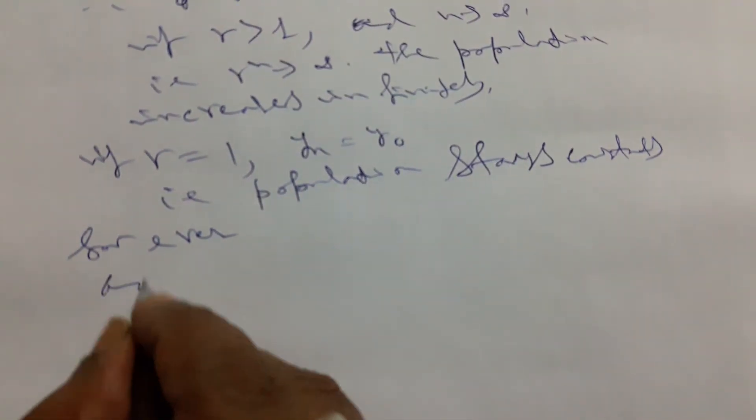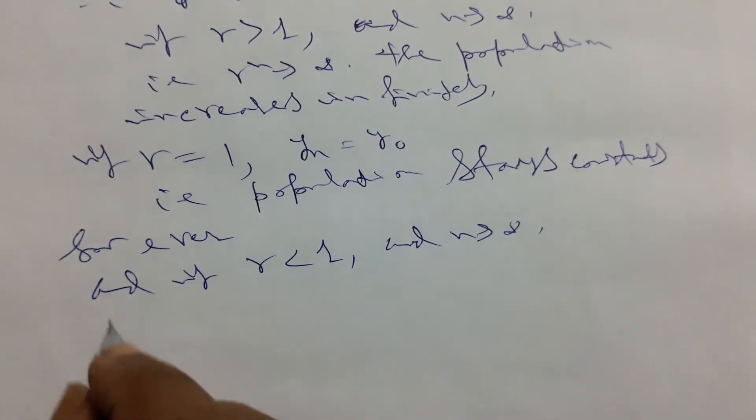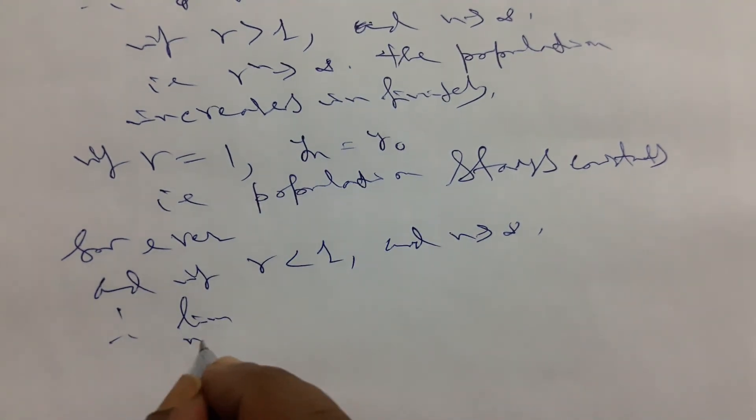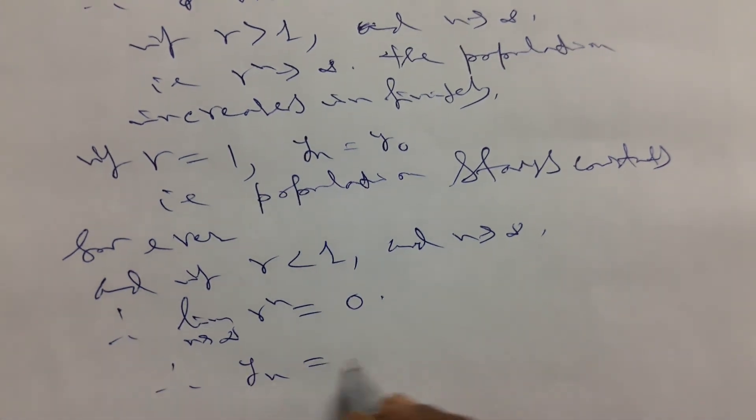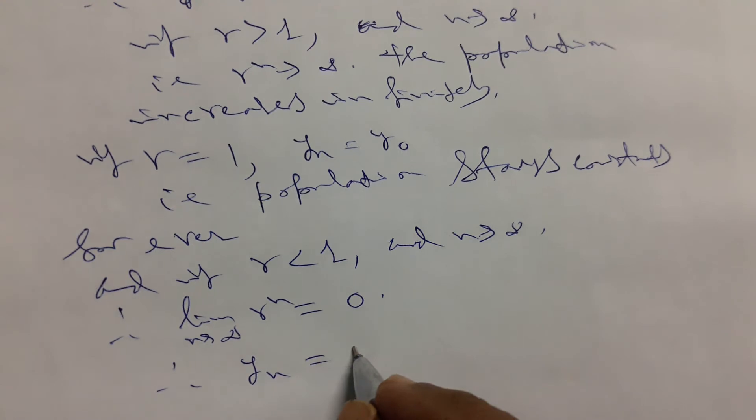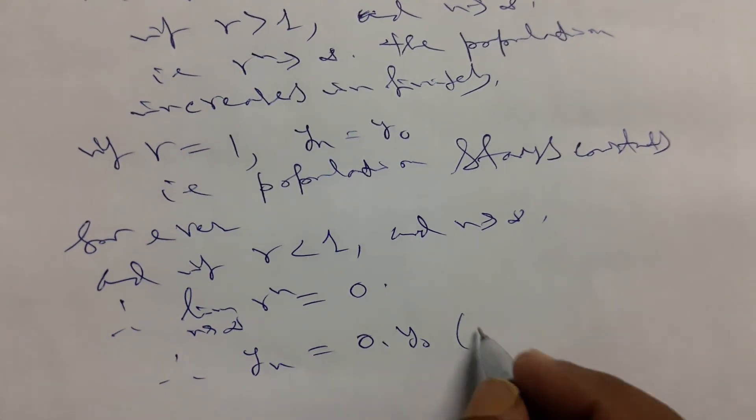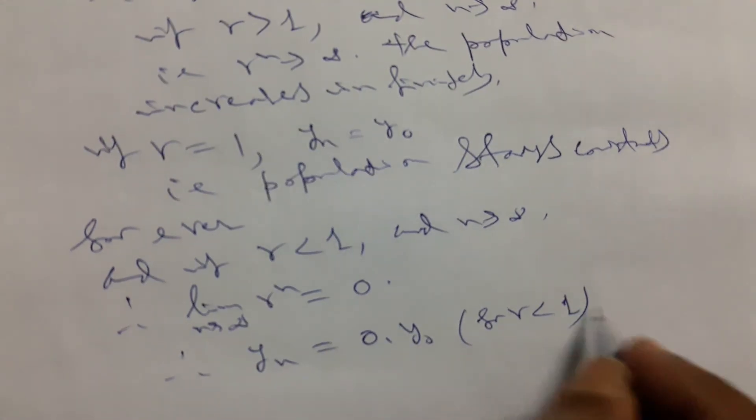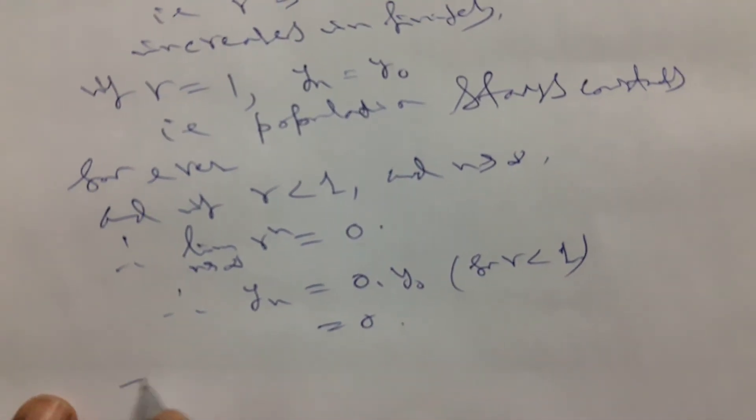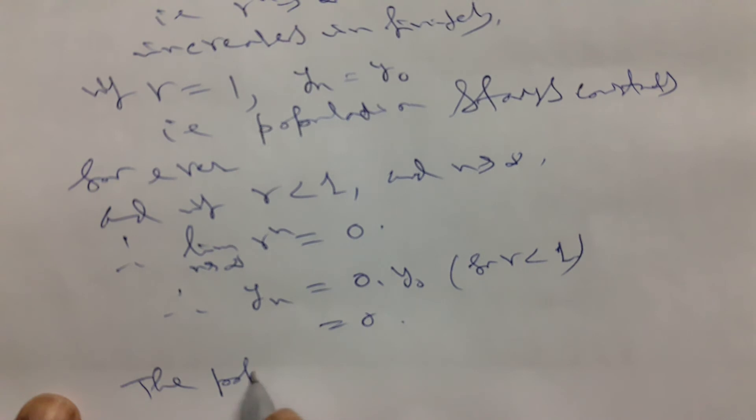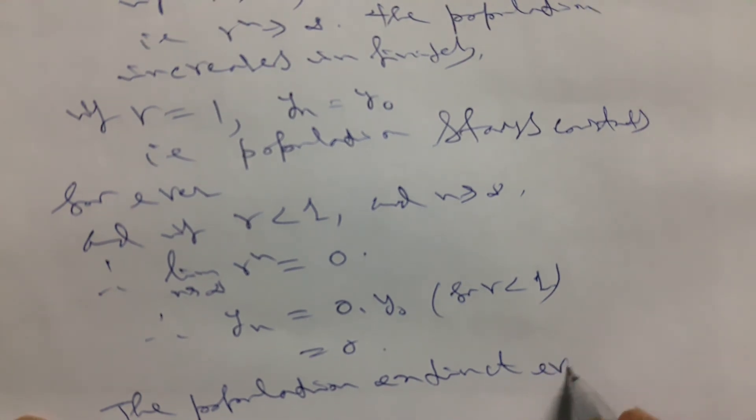And if r is less than 1 and n tends to infinity, then limit as n tends to infinity r^n will be 0. Therefore y_n equals 0. For r less than 1, the population becomes extinct eventually.